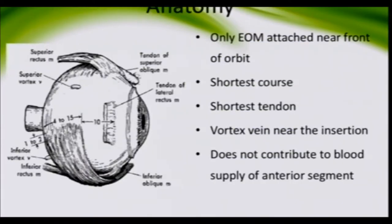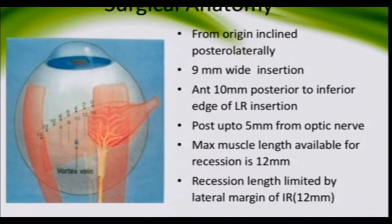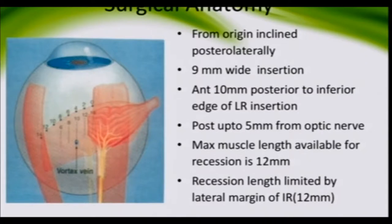Looking at the inferior oblique surgical anatomy: the muscle runs posteriorly and laterally from its origin. It has a large wide 9-millimeter insertion, located 10 millimeters posterior to the inferior edge of the lateral rectus — slightly posterior but not very difficult to find. Posteriorly it extends up to 5 millimeters from the optic nerve, so we should always be very cautious when dissecting the posterior part of the inferior oblique, especially when detaching it from its insertion.